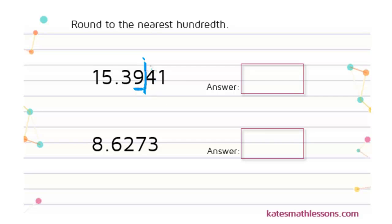So, since this is a four or less, that tells us that this nine just stays the same. So our rounded answer would be fifteen point three nine.